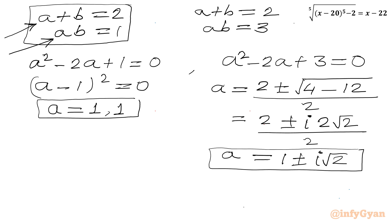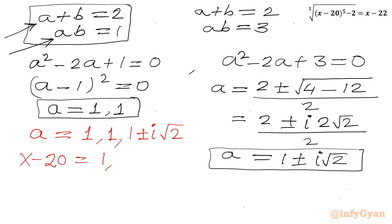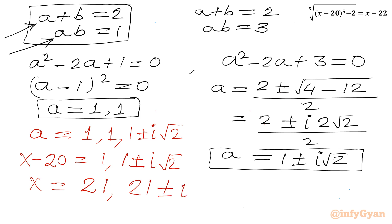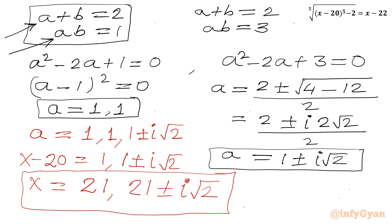Now a was our substitution x minus 20. Substituting back: from System 1, a equals 1, so x minus 20 equals 1, giving x equals 21 with multiplicity 2. From System 2, a equals 1 ± i√2, so x equals 21 ± i√2. So we have four solutions in total: x equals 21 (multiplicity 2), and the two complex solutions x equals 21 plus i√2 and x equals 21 minus i√2.